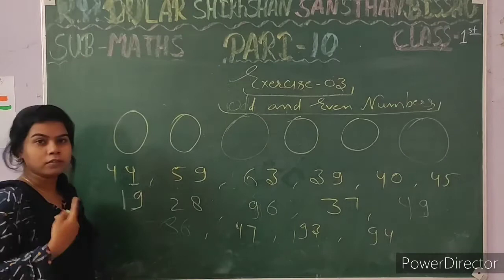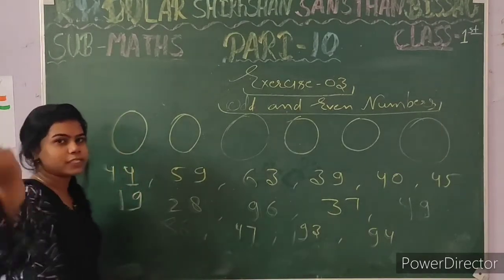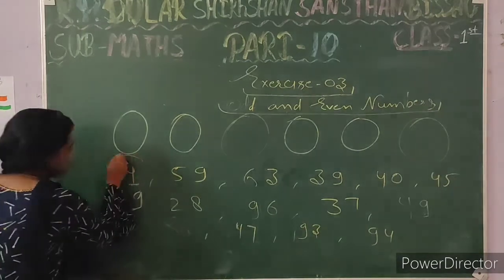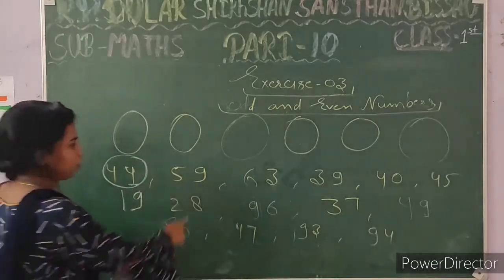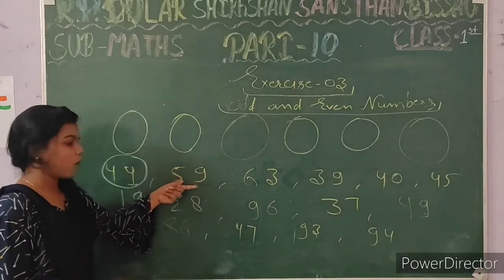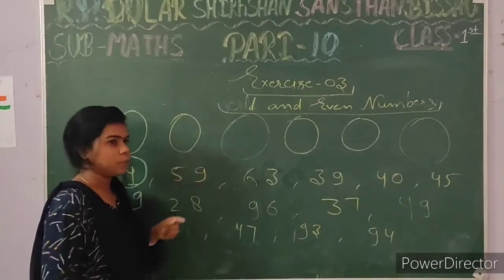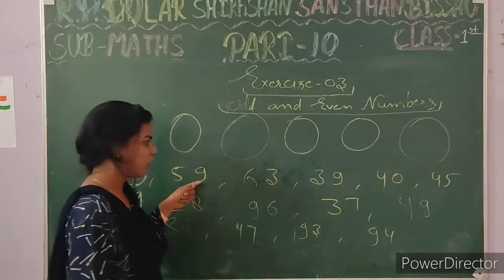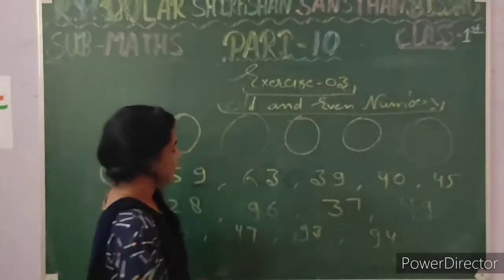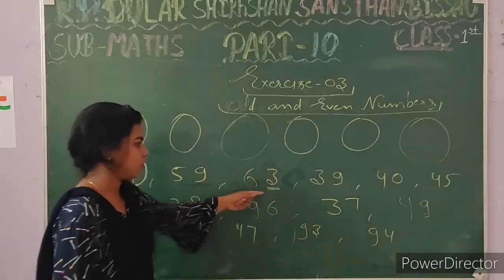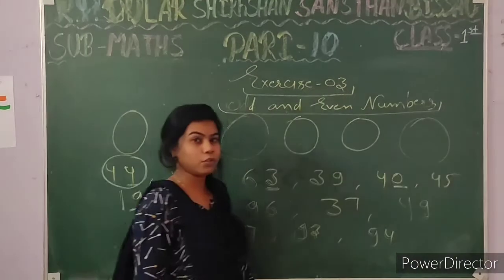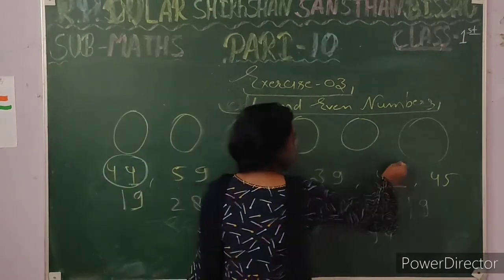If the ones digit is 0, 2, 4, 6, or 8, then that number is even. So looking at 54 — the ones digit is 4, so we encircle this number. For 59 — the ones digit is 9, so we cannot say it is even; we cannot encircle it. For 63 — the ones digit is 3, so this is also not an even number. For 39 — the ones digit is 9, also not an even number. For 40 — the ones digit is 0, so we encircle this number.